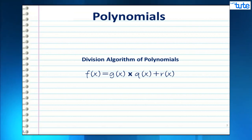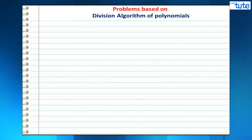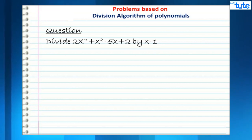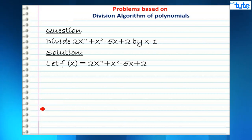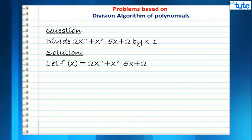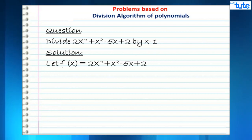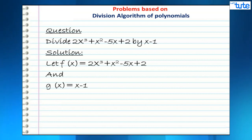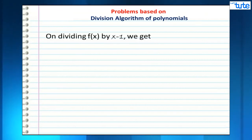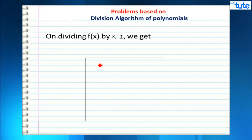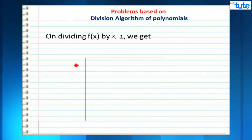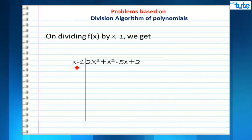Let's move on to the first type. The question says: divide 2x³ + x² - 5x + 2 by x - 1. So f(x) = 2x³ + x² - 5x + 2 and g(x) = x - 1. We will solve this by the long division method, writing our dividend and divisor in position.